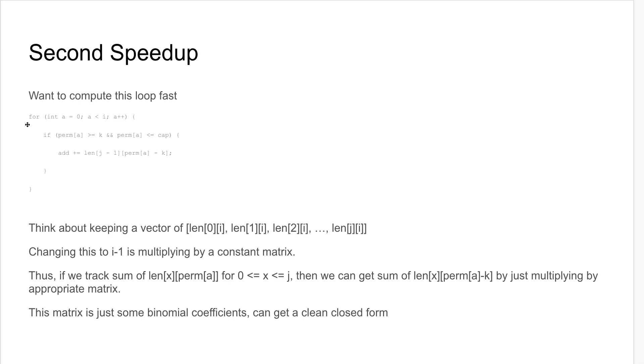The second speedup is basically we want to compute the sum fast. And this optimization is a little bit harder to explain, but you can think about keeping a vector of len[0][i], len[1][i], len[2][i], all the way to len[j][i].